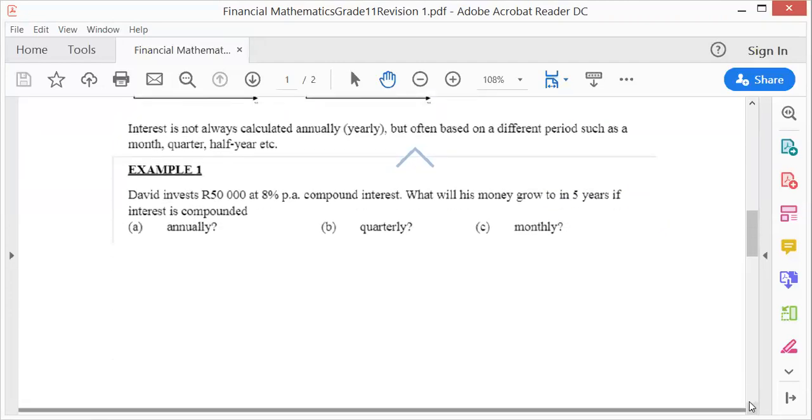David invests 50,000 at 8% per annum compound interest. What will his money grow into in 5 years if interest is compounded annually, quarterly, or monthly? When you approach a financial problem, always ask yourself: is it simple or compound?